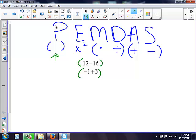So I look at the top, I'm going to do parentheses. I have 12 minus 16. Again, we can change the minus to an addition problem. So really this is the same thing as 12 plus a negative 16, which gives me a negative 4.